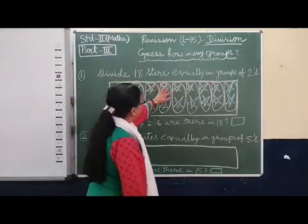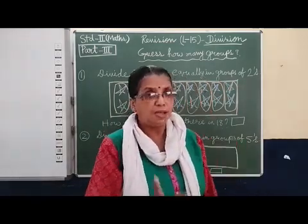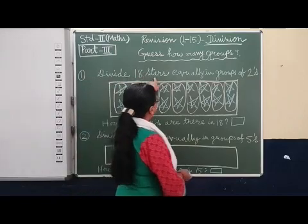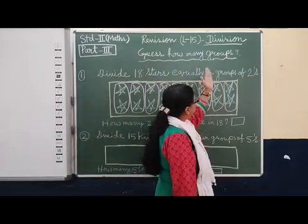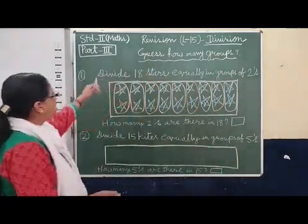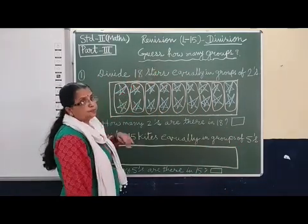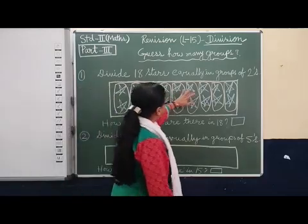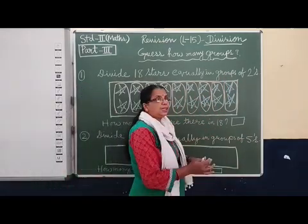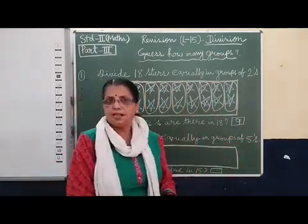We have made groups, and in each group there are two stars. First, second, third, four, five, six, seven, eight, nine — that means we have formed nine groups. We said that 18 stars should be equally distributed in groups of twos, and we have formed groups of twos and distributed 18 stars equally. So how many groups can be formed? Nine groups. How many twos are there in 18? Nine. Yes, very easy!